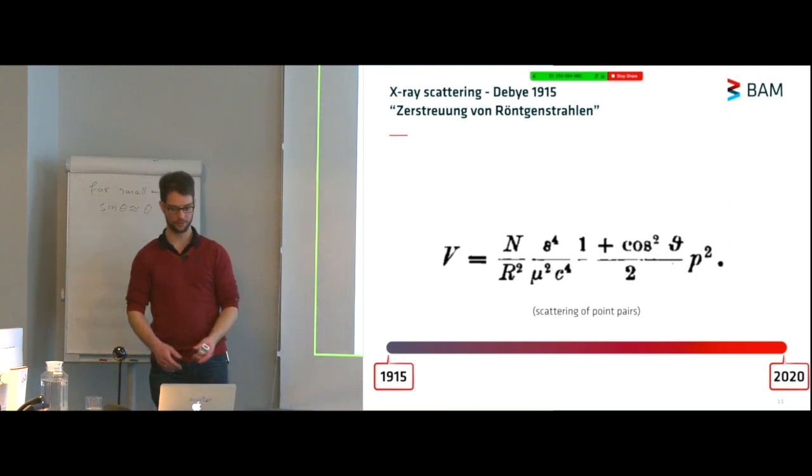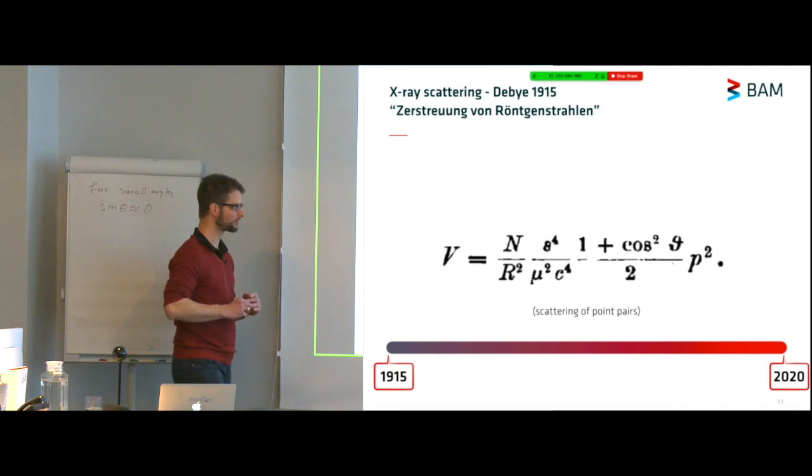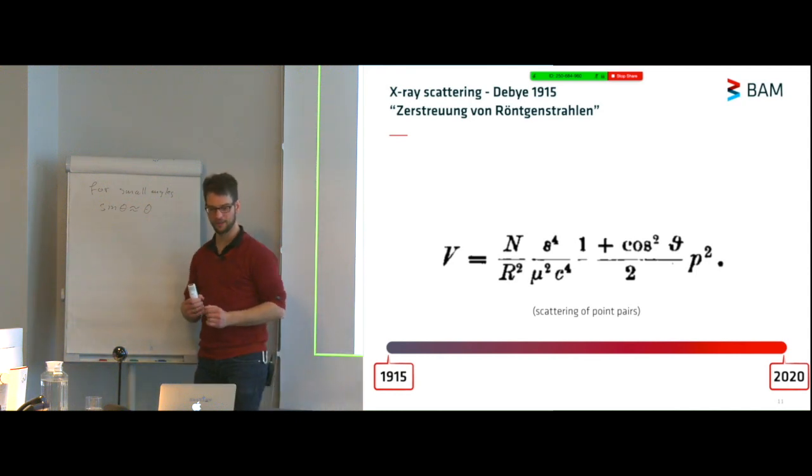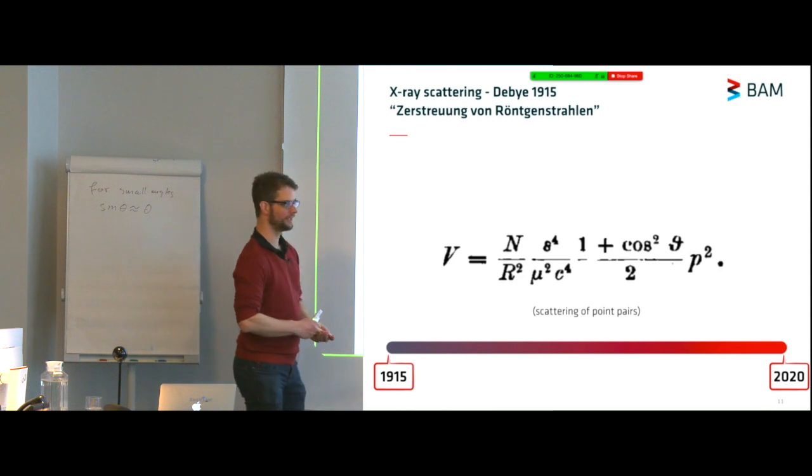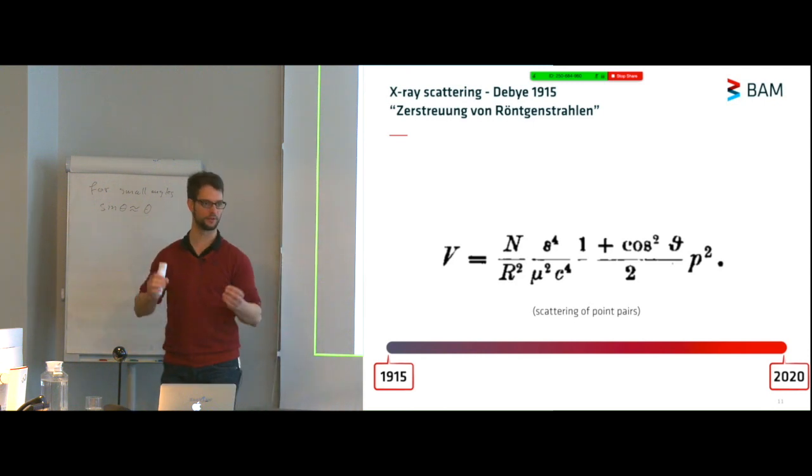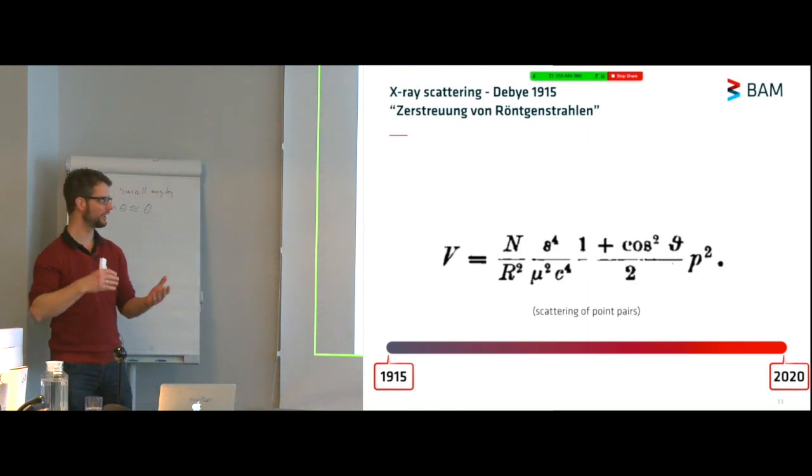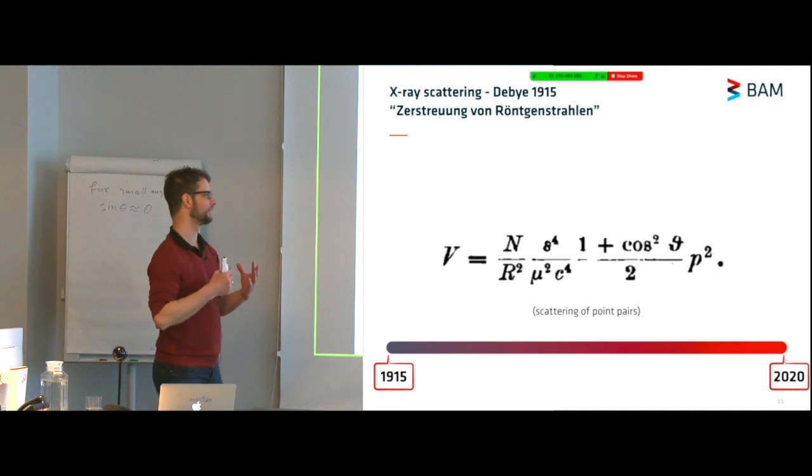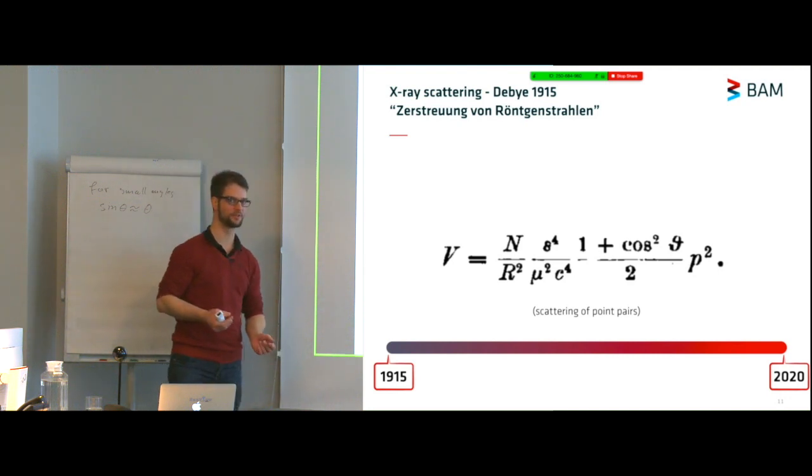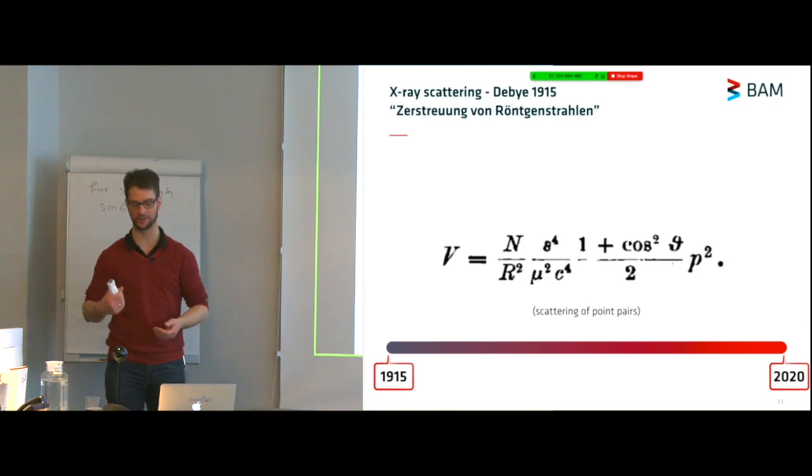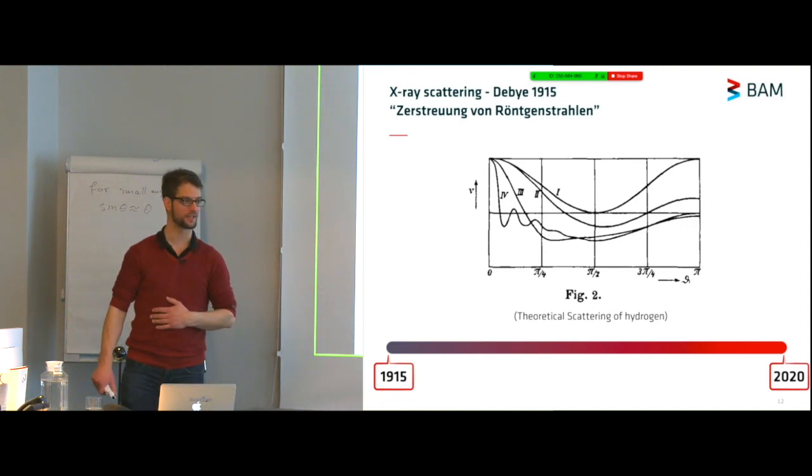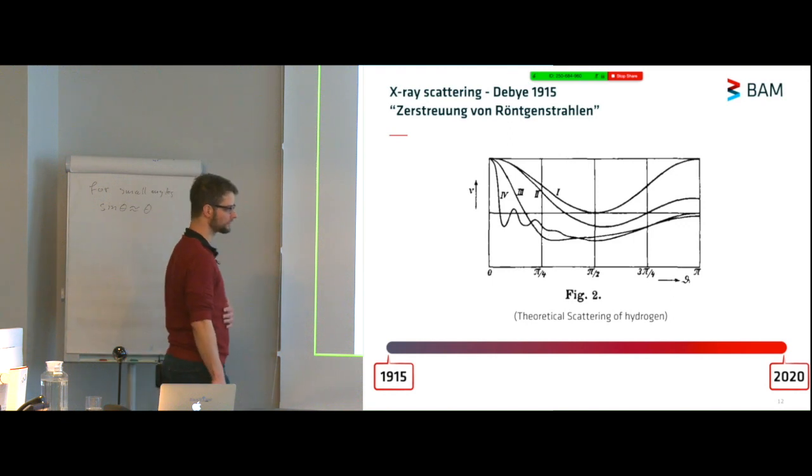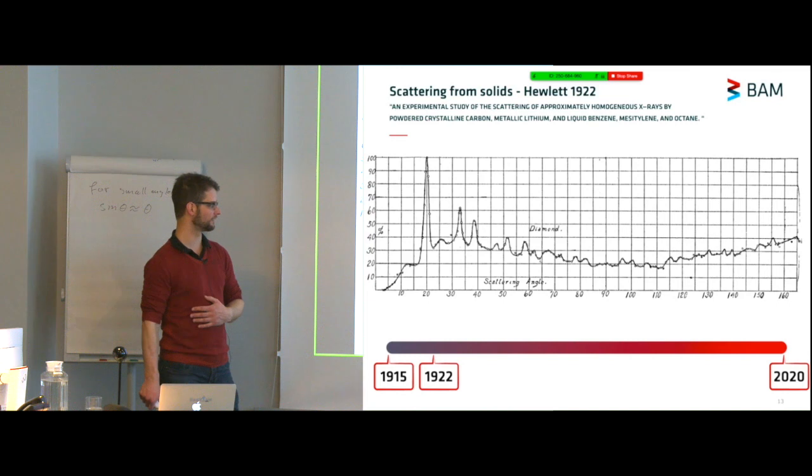He published a paper called the Scattering of X-rays and publishes this equation. That is a very important equation. You'll see it appear in software even to this day. What this equation allows you to do is to calculate the scattering pattern based on selecting point pairs, random pairs of points inside your objects. These points can be electrons, atoms, or just generic blobs. This is used for calculating scattering of proteins. Debye used this to calculate the theoretical scattering of hydrogen, but I haven't noticed any practical experiments until 1922.